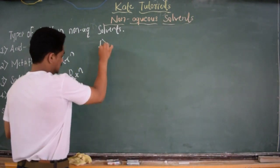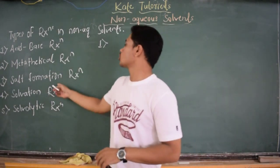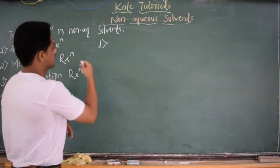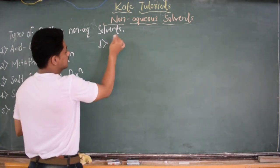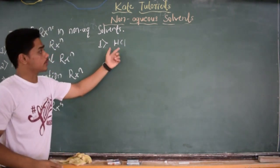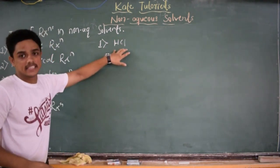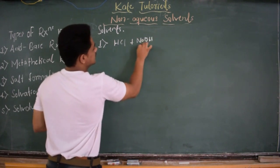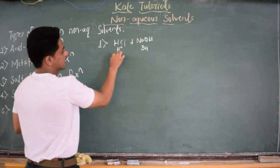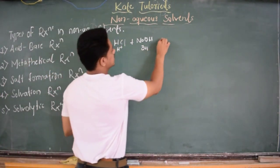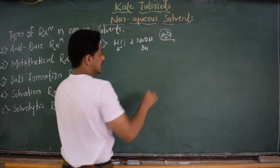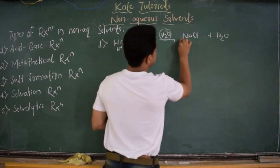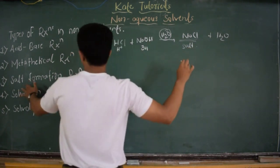First is acid-base reaction. I am going to discuss acid-base as well as salt formation together because both are essentially the same. In aqueous medium, HCl acts as acid because of H⁺ ion, and any OH⁻ species acts as base. Acid and base react in presence of H₂O to form NaCl (salt) plus water. So this is a salt formation reaction in aqueous solvent.